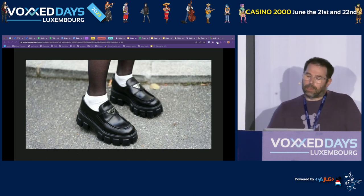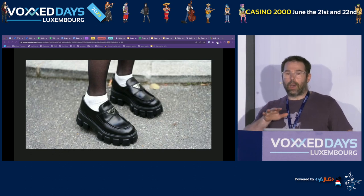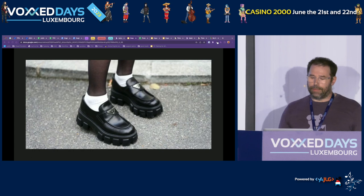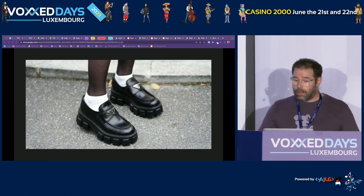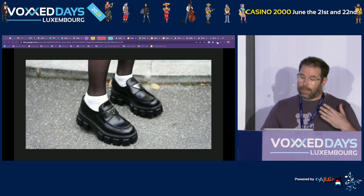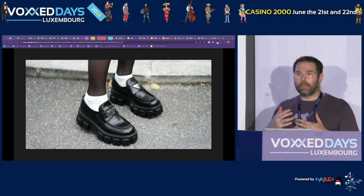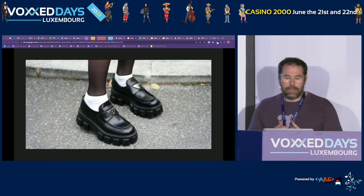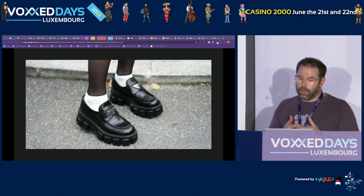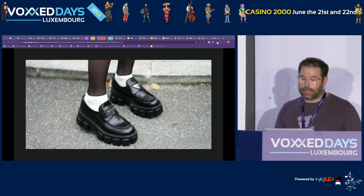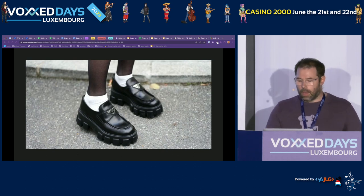Observability is a change of perspective in the way we observe our applications. We place ourselves in the user's shoes. If we notice latency in the application — what we call symptoms — then we look for what may be the cause. This cause can be high CPU usage, but high CPU usage will not necessarily cause latency. So we don't want to be alerted on causes, but on symptoms.